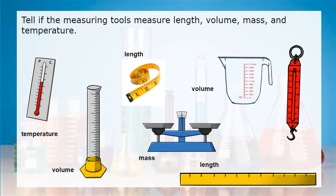Here we have a ruler and it measures length. And we have the spring balance, which also measures mass.